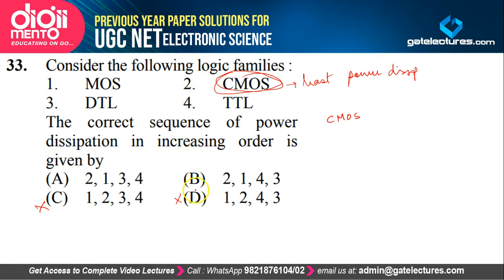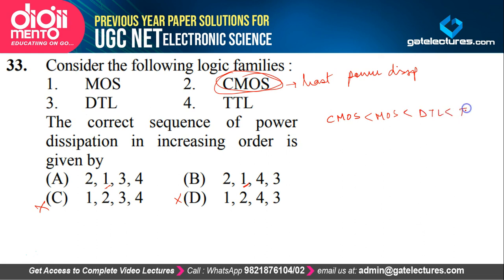Second is going to be MOS only. MOS has least power dissipation more than CMOS but less than all the other families. Next is going to be DTL, and highest power dissipation among all is going to be TTL. So if you match the options — CMOS, MOS, DTL, TTL — this is option A. The correct answer is option A. This is just theory you have to remember. Just try to remember the comparison, that helps a lot.